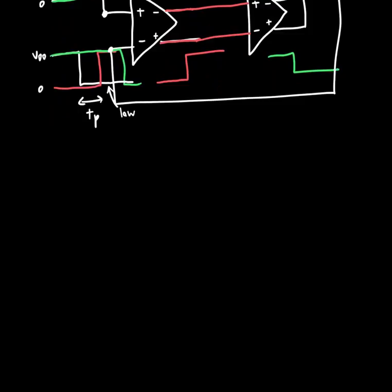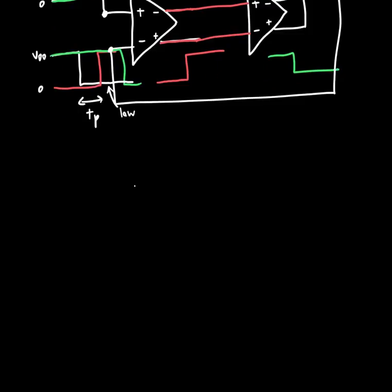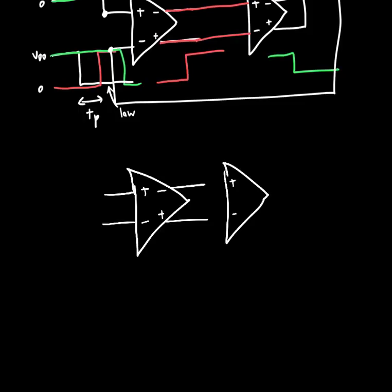And let me just redraw this below so it's less messy. We've got our differential ring oscillators like this, plus, minus, plus, minus, plus, minus, minus, plus. They're connected like this.